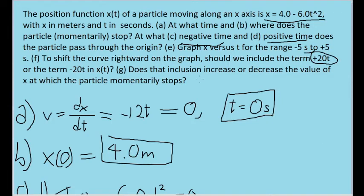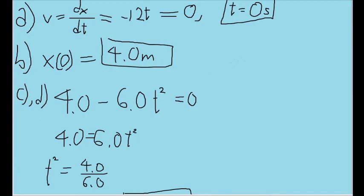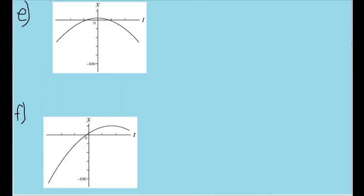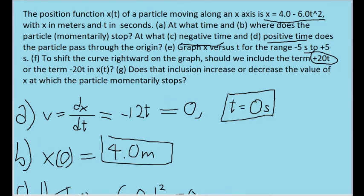Finally, Part G asks us whether we're increasing or decreasing the value of x at which the particle stops moving when we generate this second graph here. Now, if you look at the graphs side by side, you'll see that when we add the plus 20t term to the second graph, not only does the graph seem to shift to the right, but it also seems to shift upwards. Notice that the peak here seems to be higher up than it was in the first graph we created. Since that peak of this graph represents where the slope is zero, in other words, where the velocity is momentarily zero, in other words, where the particle momentarily stops moving, that is all represented by this peak. So since that peak has seemed to shift upwards, that means that the value of x for where the particle stops moving has now increased.